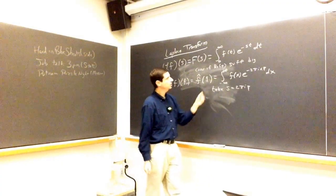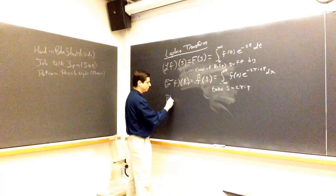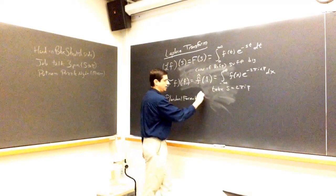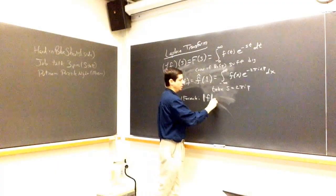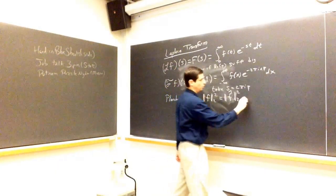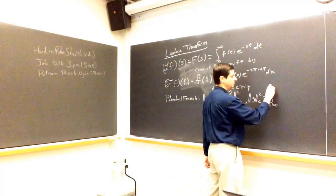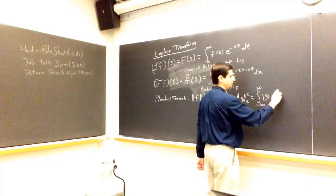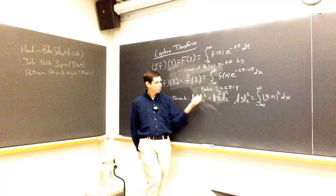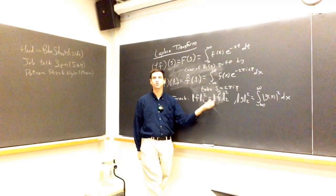These two transforms are all related. One of my favorite formulas is the Plancherel formula. It basically says the L² norm of f squared equals the L² norm of f-hat squared, where the L² norm of some function g is the integral from minus infinity to infinity of |g(x)|² dx. When you look at the Fourier transform, if f is a nice function, f and f-hat have the same L² norm.